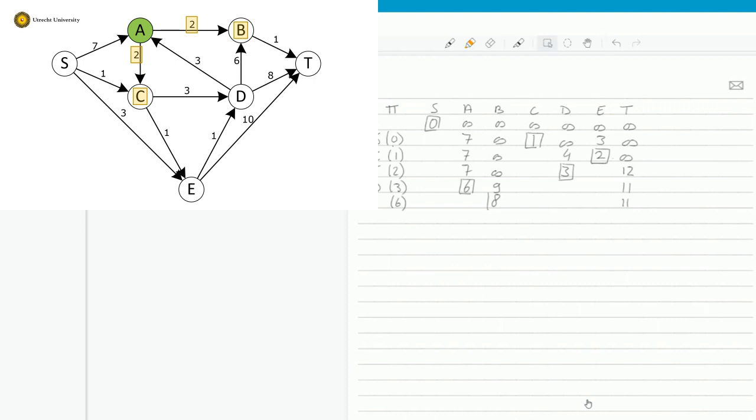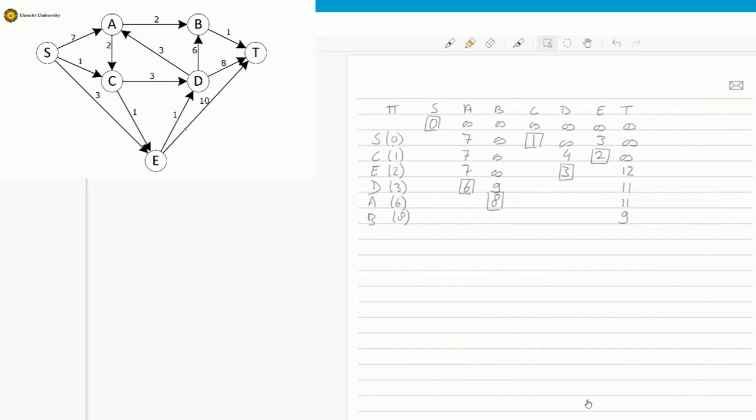So the smallest value is now node B with value 8. So the next parent is B. Remember that was with value 8. And from value B, we can go to T with 1, so that's 8 plus 1 is 9. So to T, we reach it with value 9. And now we are done because we are at T with value 9 and there are no other nodes to be visited. Hence, the shortest path from S to T is 9.